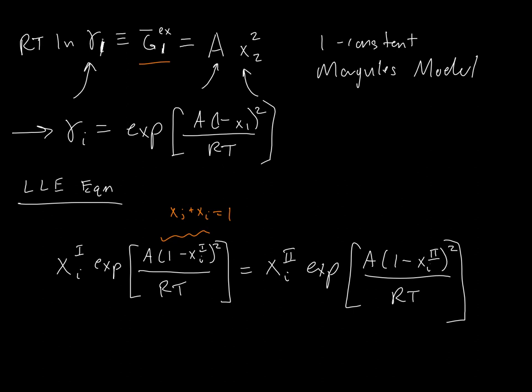Even the simplest liquid-liquid equilibrium problems are nonlinear expressions that require nonlinear solvers. In the old days you had to use guess-and-check approximation methods; nowadays we use a nonlinear solver in Excel, MATLAB, or even a calculator. The one-constant Margules model is not typically very accurate and is symmetric, so if your system is not symmetric, you must use a two-constant model, making the expression more and more complicated.